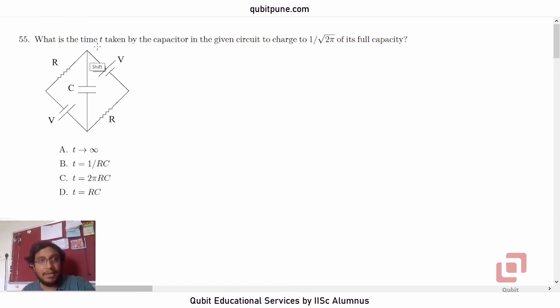What is the time t taken by the capacitor in the given circuit to charge to 1 over root 2 pi of its full capacity? And in this circuit, we have got the capacitor here, connected between these two ends. So let us name these two ends as A and B. And on one side, we have got a resistor R and a battery with potential difference or EMF V. And on the other side also, we have got a battery and a resistor R.